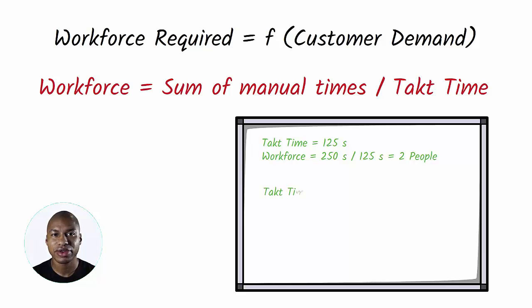If the takt time equals 250 seconds, the necessary workforce will be equal to 250 seconds over 250 seconds equals 1 person. If the takt time equals 100 seconds, it will be equal to 250 seconds over 100 seconds equals 2.3 people.